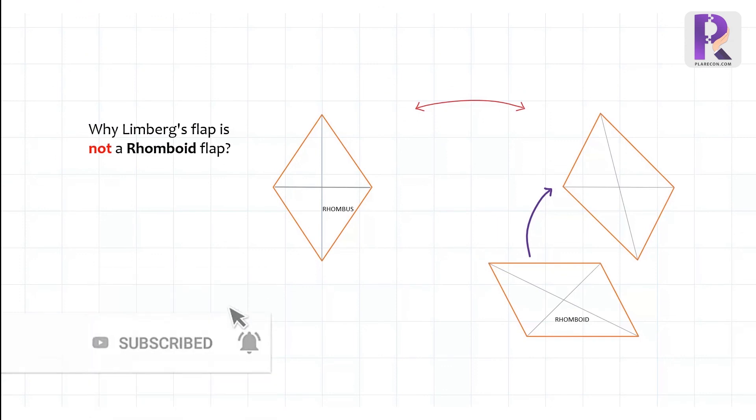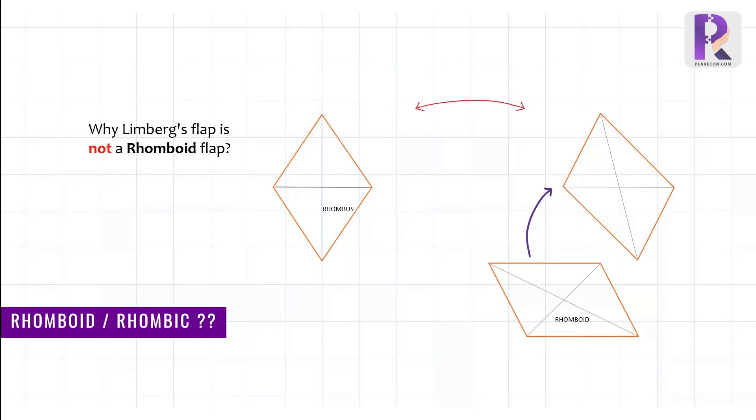Okay, now let's see why Limburg's flap is not a rhomboid flap, though it is frequently and wrongly called so. Both are parallelograms with opposite equal sides. Unlike rhombus, the adjacent sides of a rhomboid are not equal, and hence the diagonals don't meet at 90 degrees. On the right, we can see an equivalent 60-degree rhomboid defect, and we can easily make out it's not equivalent to a rhombic defect requiring a rhombic flap.